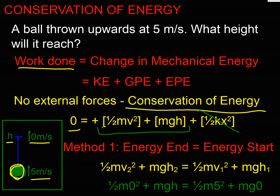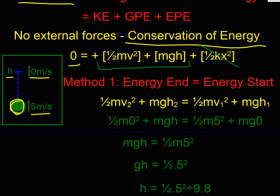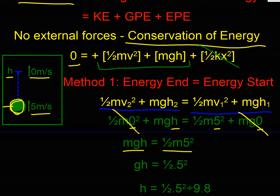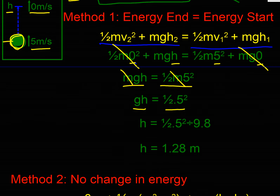Applying my first method — energy at the end must equal energy at the start — I know that half mv² + mgh at the end must equal half mv² + mgh at the start. At the end we know it's traveling at zero velocity and it's at height h above the starting point. At the start it was traveling at 5 meters per second and had no height. So those two terms go to zero, and equating: mgh must equal half mv₀². The mass cancels, so gh = ½v², and substituting values in, the height it would reach is 1.28 meters.